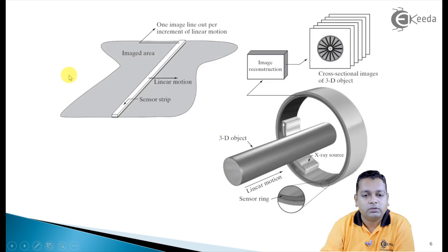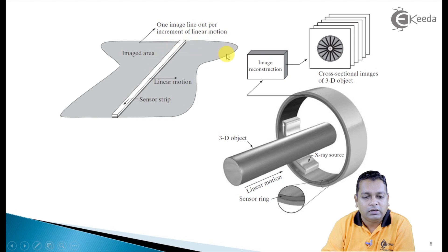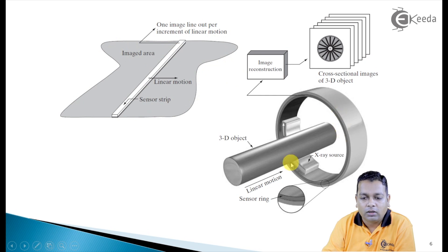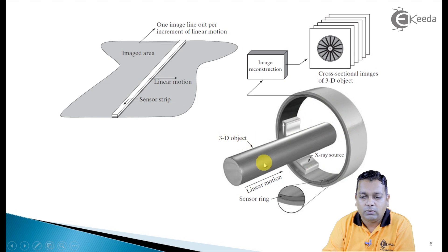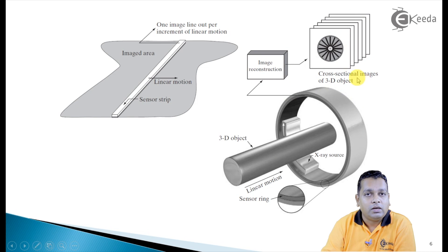In this diagram, the first arrangement shows the inline sensor strip with linear motion perpendicular to it — one image line per increment of linear motion — and the imaged area is shaded here. Another system shown is a circular arrangement, for example a medical X-ray equipment where the X-ray source is positioned and the 3D object moves linearly through the central axis, allowing cross-sectional slices to be imaged and the full 3D object to be reconstructed.